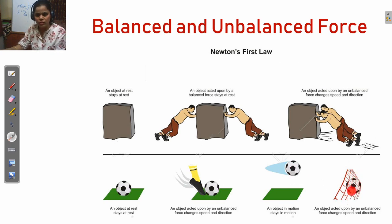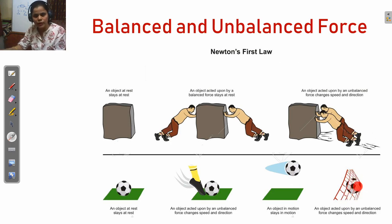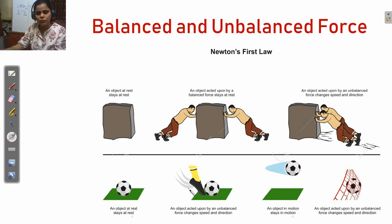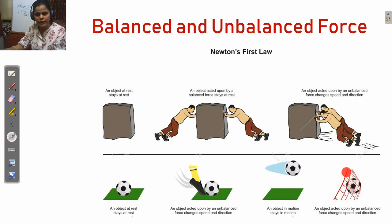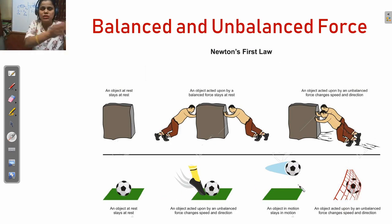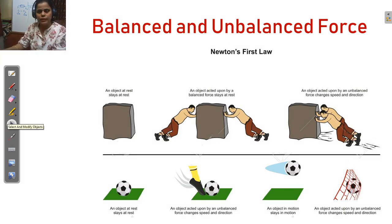When the ball is in motion and hits an obstacle like a net, the net applies an unbalanced force in the opposite direction to the ball, changing the ball's speed and direction. So first the ball is at rest, a boy applies a force and the ball moves, but the net applies force in the opposite direction, changing the ball's direction. This illustrates balanced and unbalanced forces.